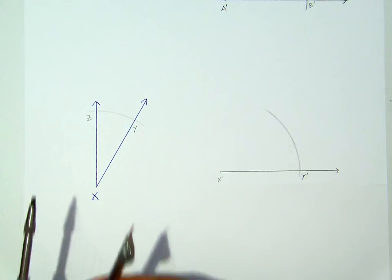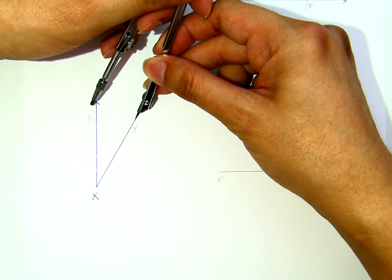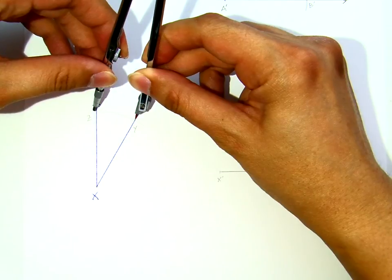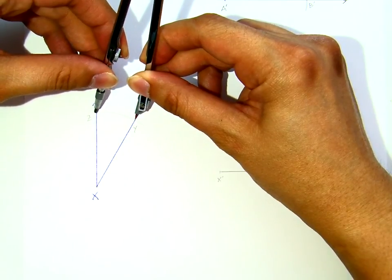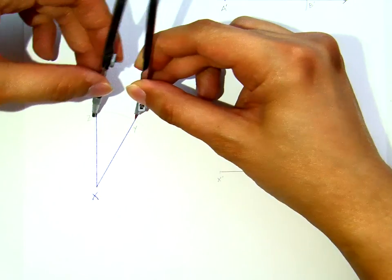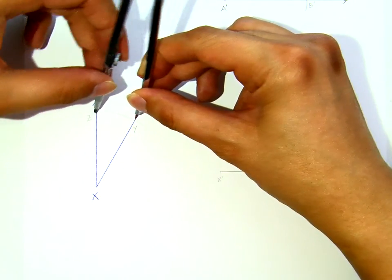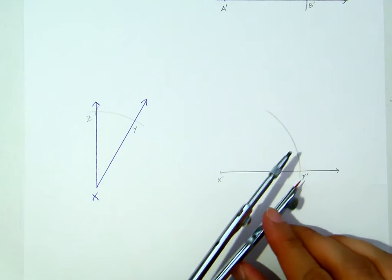Now, what I need to do is to copy the opening here from Y to Z. Now, this is the one that you need to make it precise. From Y to Z.